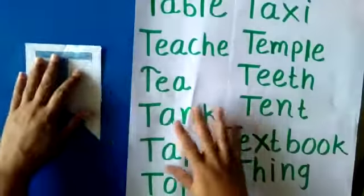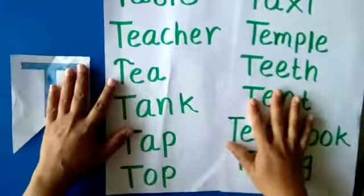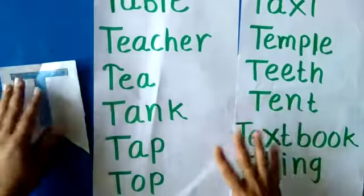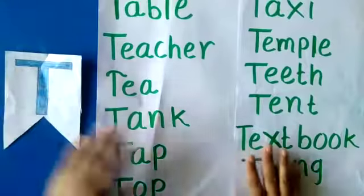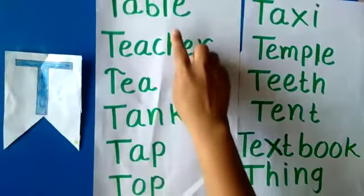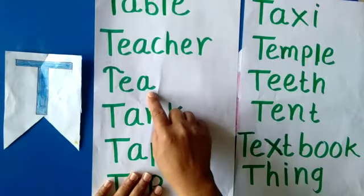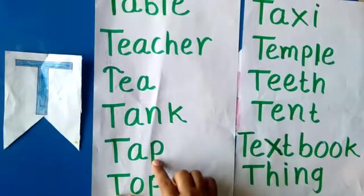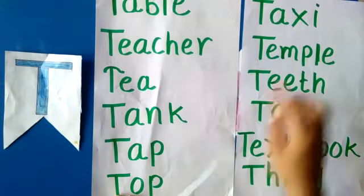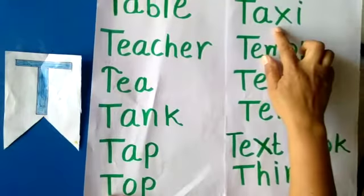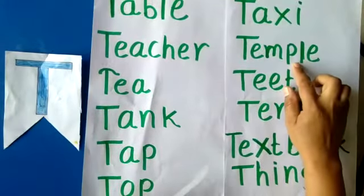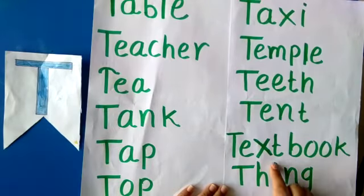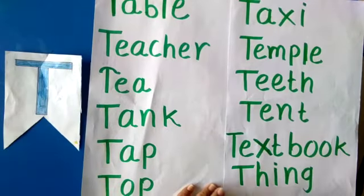Alphabet T — words starting with the letter T: Table, Teacher, Tea, Tank, Tap, Top, Taxi, Temple, Tent, Textbook, Thing.